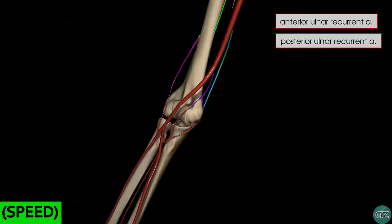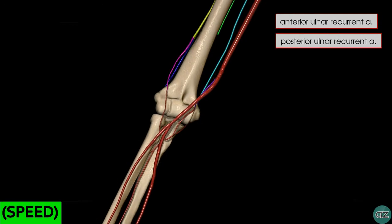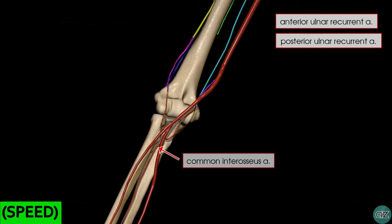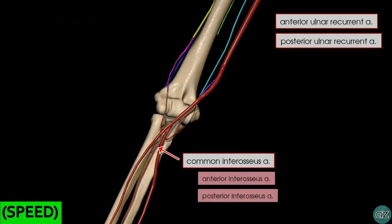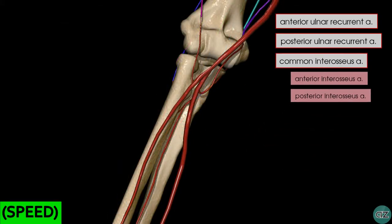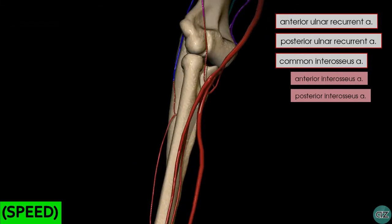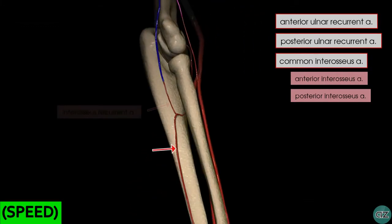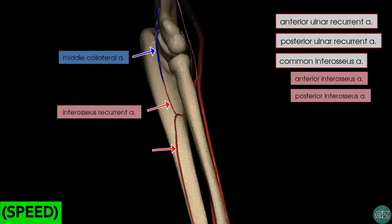A little more distally there's another branch given off the proximal ulnar artery — the common interosseous artery, which divides into an anterior branch and a posterior branch. You can see here the anterior interosseous artery, which descends down the forearm on the anterior aspect of the interosseous membrane. Rotating the model posteriorly, we can see the posterior interosseous artery, which gives off the interosseous recurrent artery that anastomoses with the middle collateral artery — a branch of the profunda brachii artery.